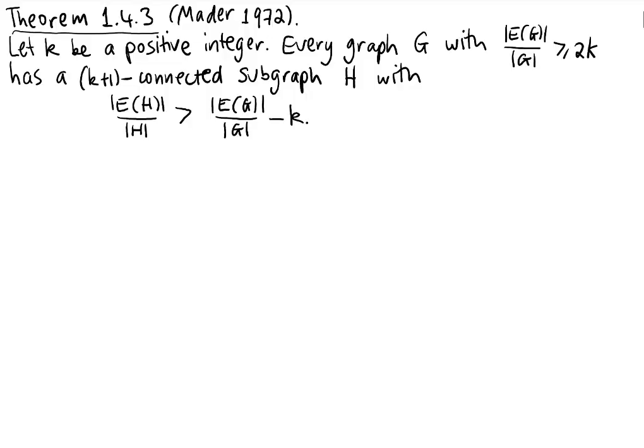We'd like to prove Mader's Theorem. Mader's Theorem says: if k is a positive integer and you have a graph G such that the ratio between the number of edges of G divided by the number of vertices is at least 2k, then G has a k+1 connected subgraph H whose density — the number of edges of H divided by the number of vertices of H — is strictly bigger than the number of edges of G divided by the number of vertices of G, take away k.